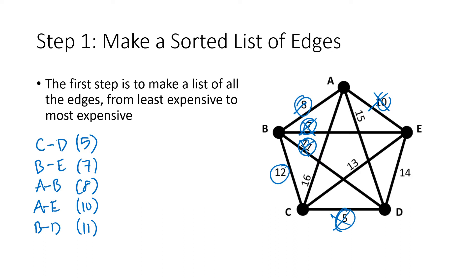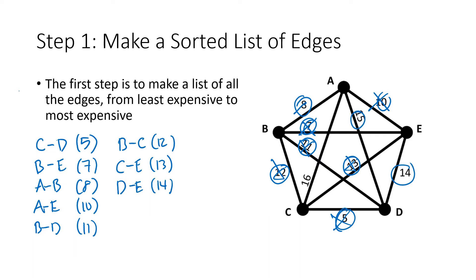After that, there's an 11 from B to D, then a 12 from B to C, a 13 from C to E, a 14 from D to E, a 15 from A to D, and finally a 16 from A to C. Now if two edges have the same number, you just put them both in some order on the list — it doesn't really matter which order you put them in if you have a tie. In this case we didn't have any ties.